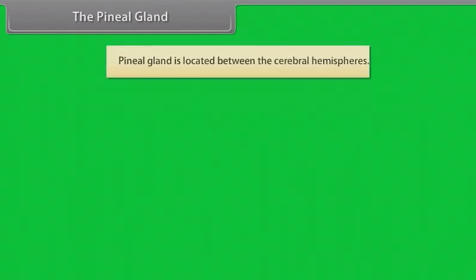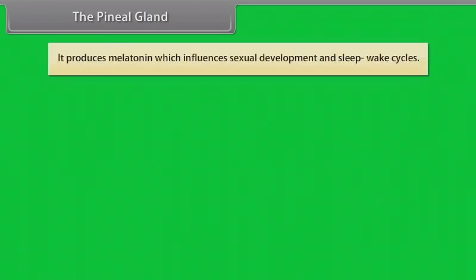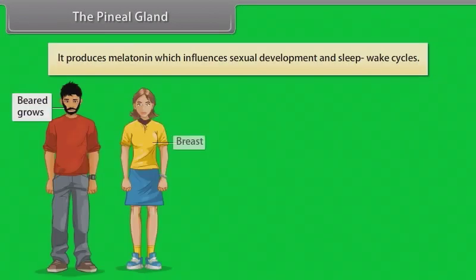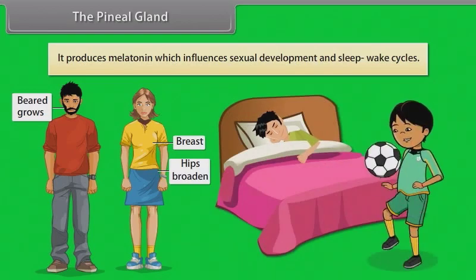The pineal gland is located between the cerebral hemispheres. It produces melatonin, which influences sexual development and sleep-wake cycles.